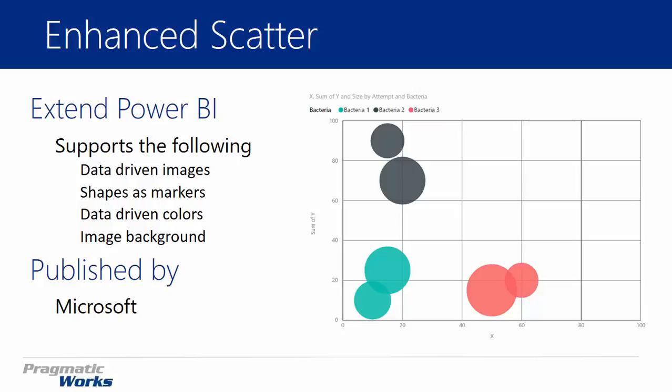Things that this can support that you can't do in the traditional scatter chart include data-driven images. So you'll see I have a bunch of bubbles on the chart on the right-hand side. If you don't want to see bubbles or shapes, you can actually prefer to see images — you can replace those shapes with actual images with the Enhanced Scatter Chart.